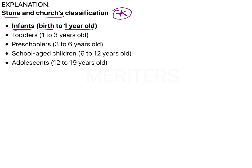Between one to three years the child is a toddler, between three to six years the child is a preschooler, and from six years to twelve years the child is a school-aged child. After twelve years is when puberty begins, so the child will be an adolescent.